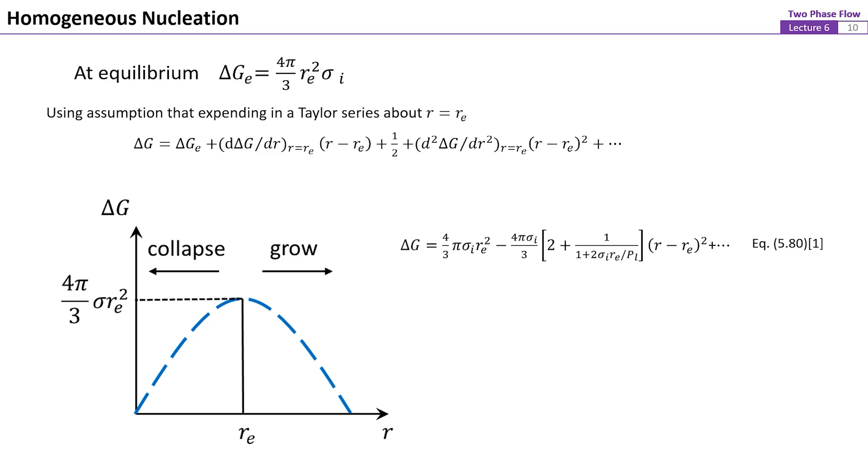The change in Gibbs free energy associated with the embryo formation is shown as this first equation on the top. Then apply the Taylor series about R equals RE. The change in delta G corresponding to small changes of radius about RE can be estimated and plotted as the figure shown here.